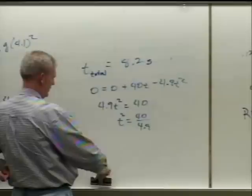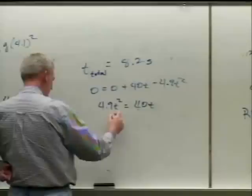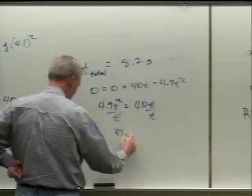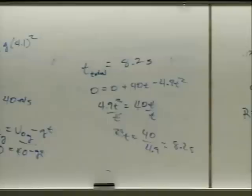You can divide out one t — that t represents zero — then t equals 40 over 4.9, which gives about 8.2 seconds. Thanks to Don for catching that. So the range equals the x-velocity times 8.2.